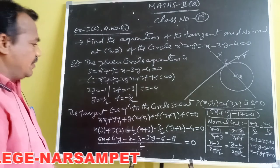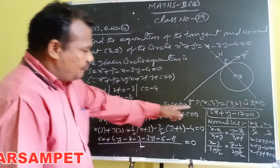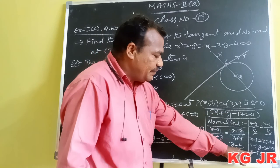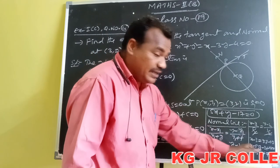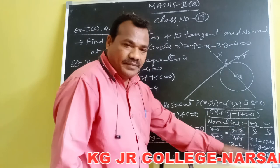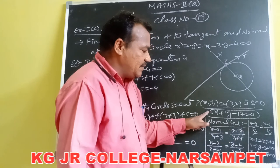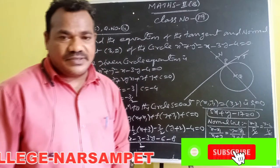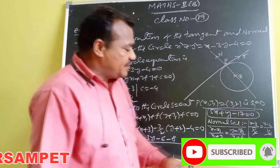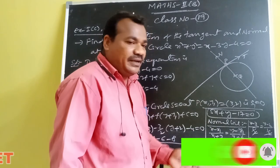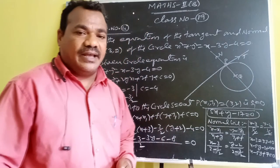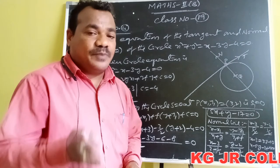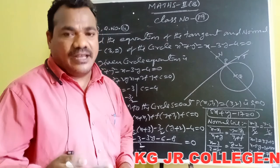The tangent line equation is 5x plus y minus 17 equals 0 and the normal line equation is x minus 5y plus 7 equals 0. We observe that the slope of the tangent is minus 5 and the slope of the normal is 1 by 5. The product of the slopes equals minus 1, confirming they are perpendicular. The normal can also be obtained as the perpendicular form of the tangent line.